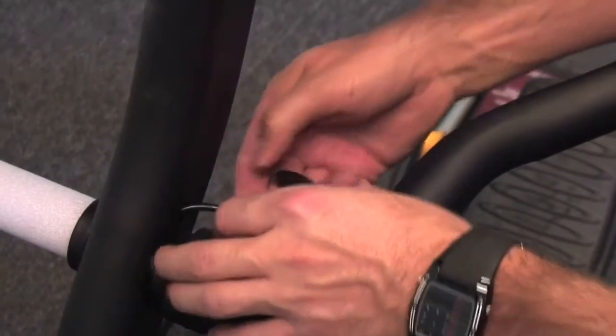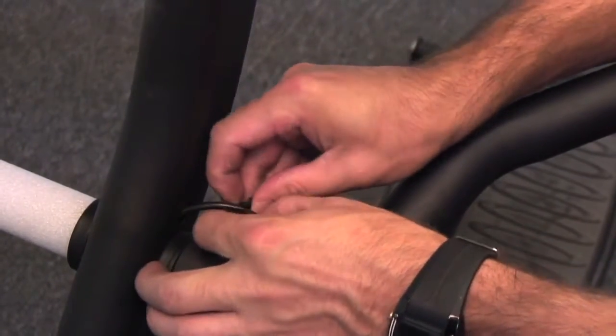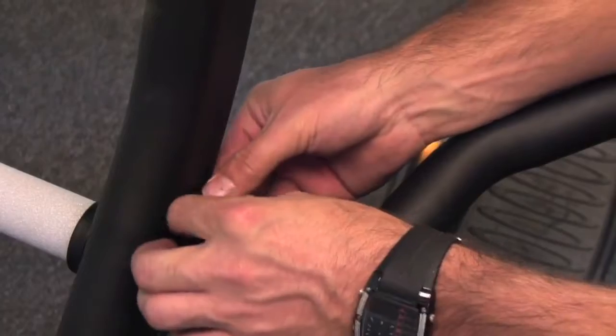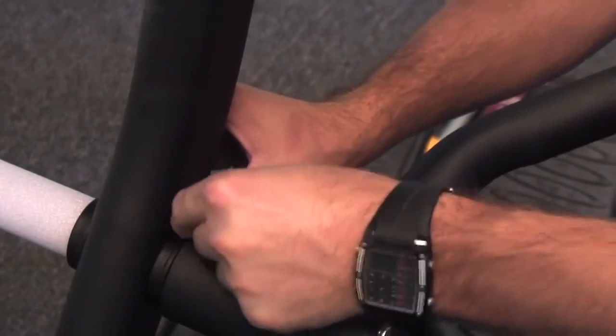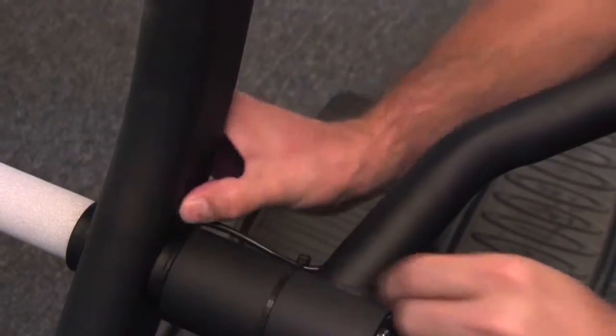And then we have a rubber grommet that is inside the hardware kit. You just snap that around the wire and then plug it into the hole in the side of the console mast.